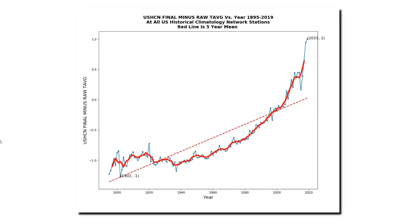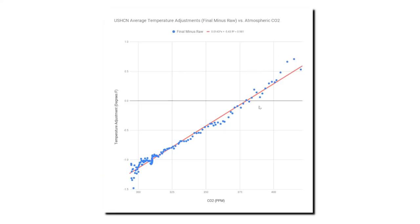Let's take a look now at those alterations. This graph shows the temperature difference between the NOAA final and the NOAA raw temperature data sets. The final data set is their altered data, and the raw data set is their actual measured temperature data. You can see that the NOAA temperature alterations cool the past by about 1 degree Fahrenheit and warm the present by about an equal amount. So NOAA has created about 2 degrees of warming in the United States since 1960 simply by altering the measured data. That graph looked suspicious, but this next graph is the real smoking gun that something very wrong is going on.